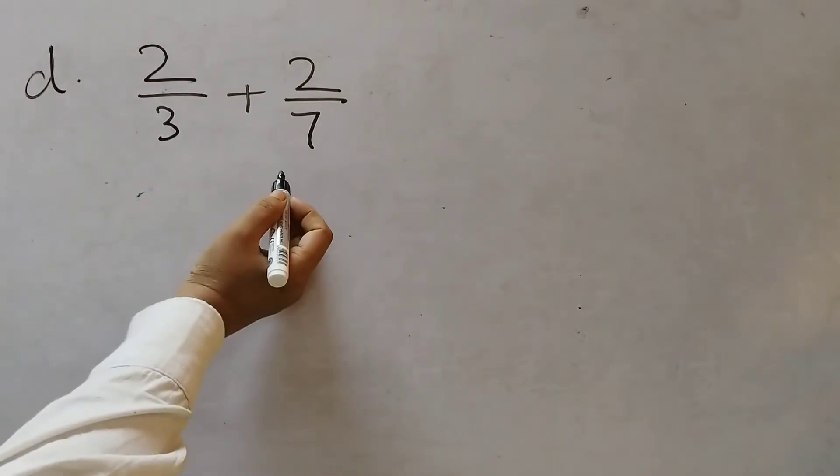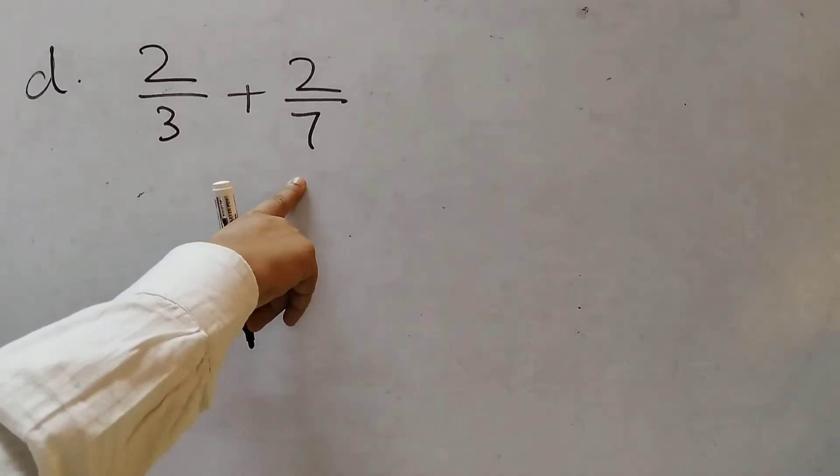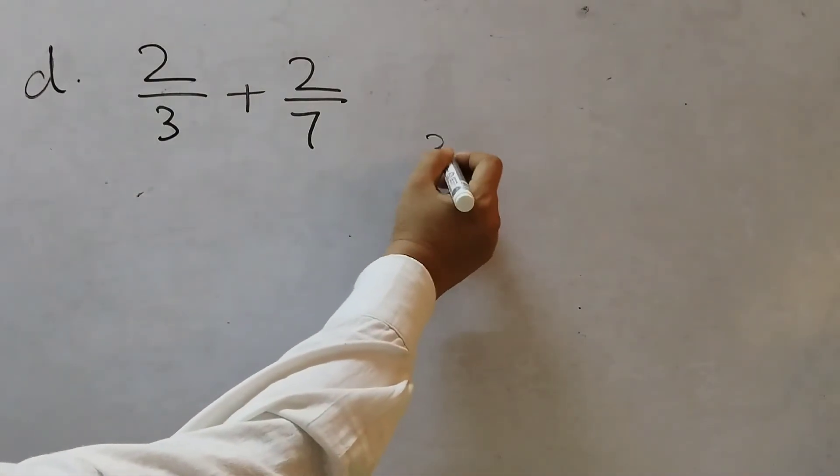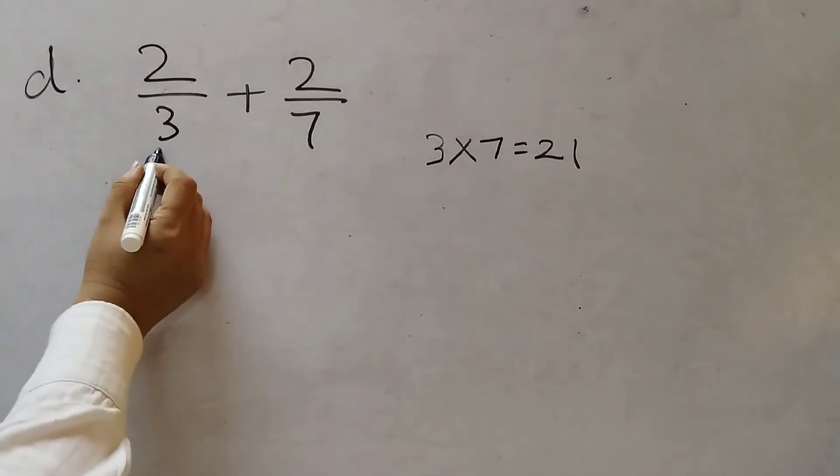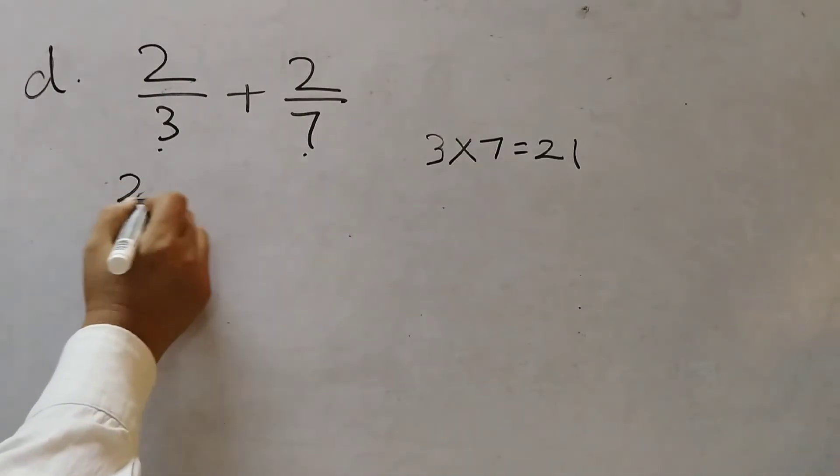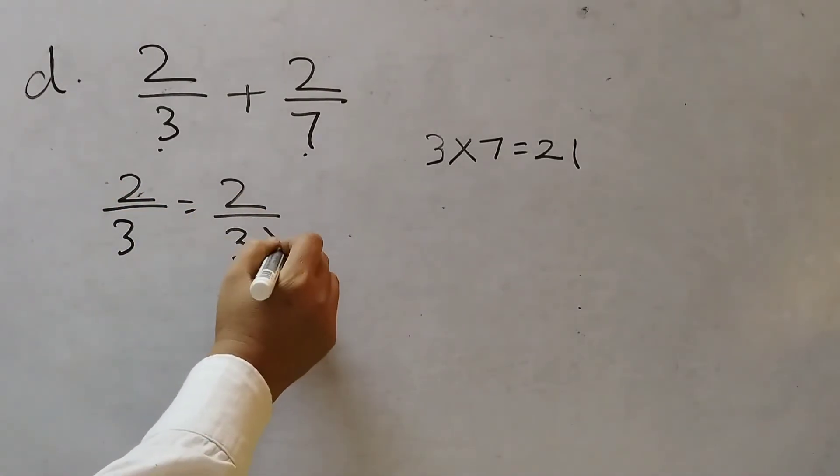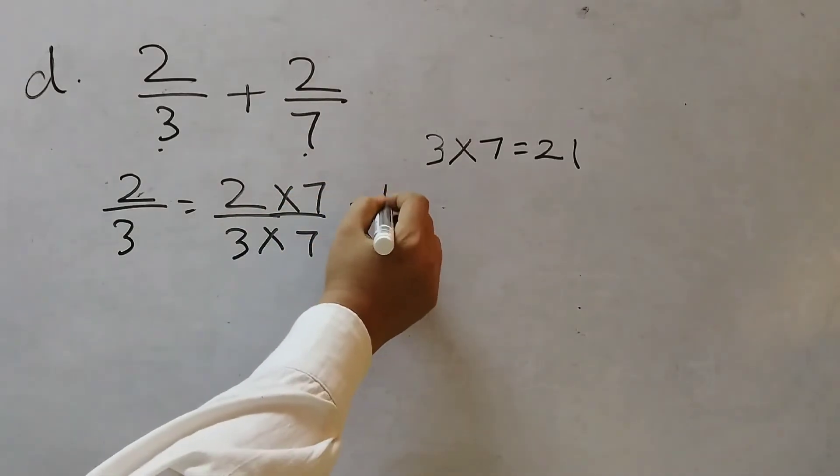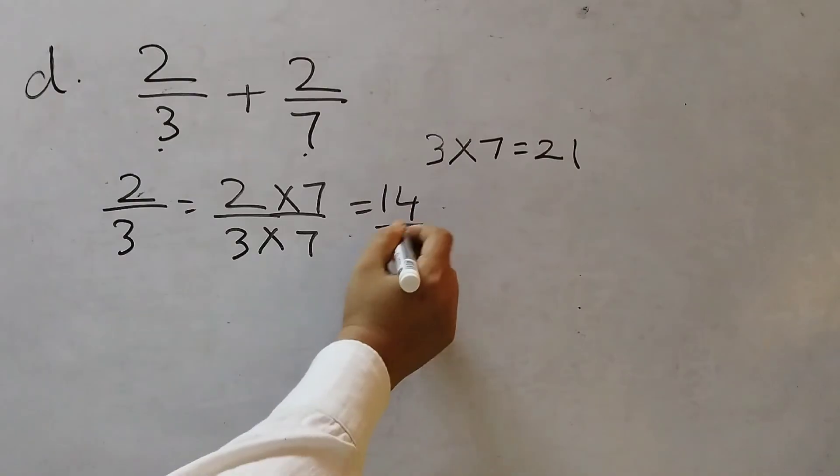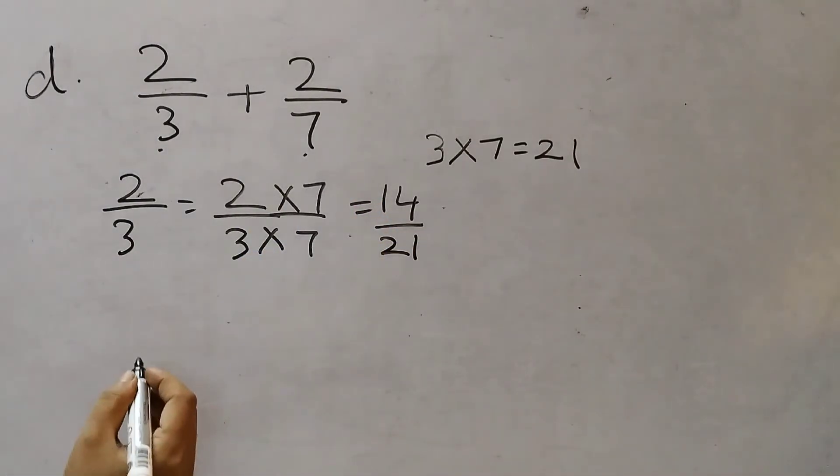Now moving on to the next one. 2 by 3 plus 2 by 7. So we see different denominators. So we need to find a common denominator. We will multiply 3 and 7. 3 7's are 21. Now we will change this denominators to 21. First we will take 2 by 3 and multiply by 7. 2 7's are 14. 3 7's are 21. 2 by 3 has become 14 by 21.